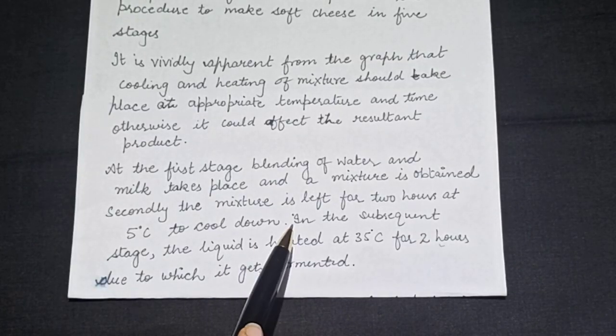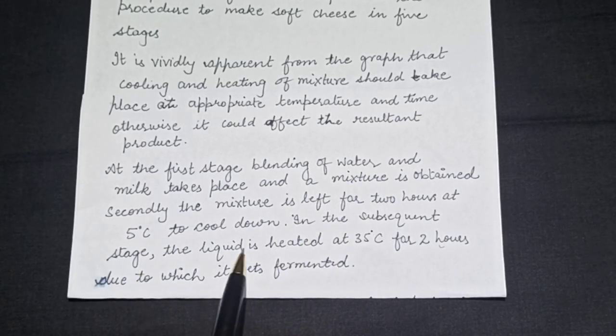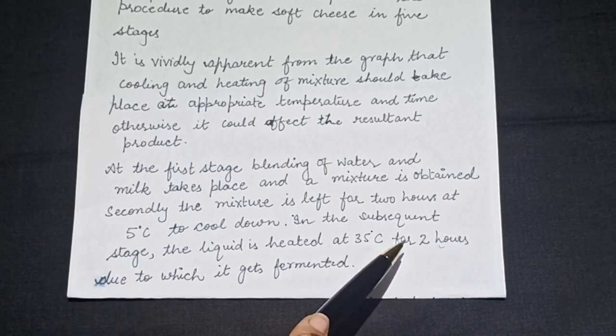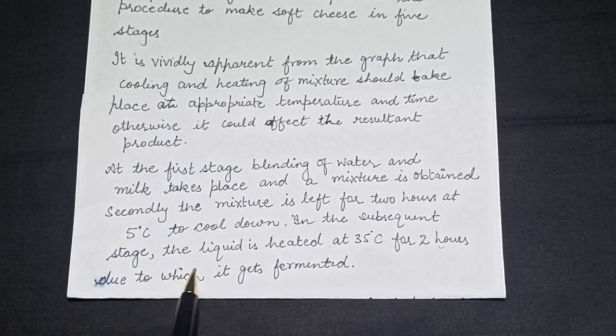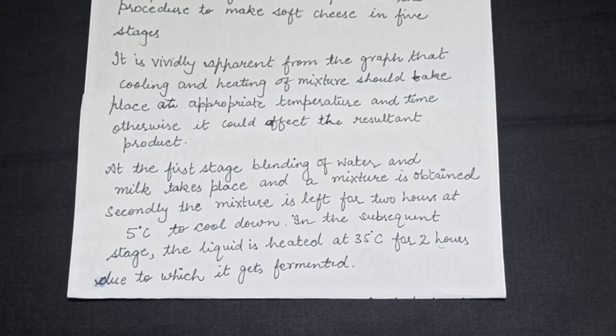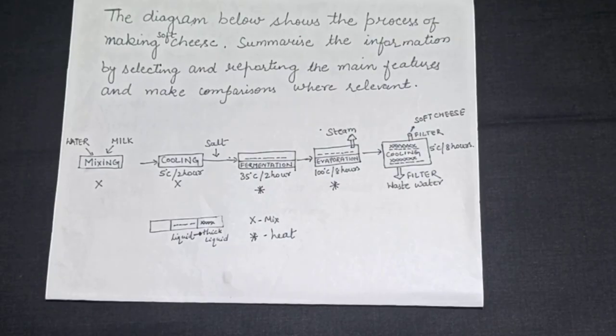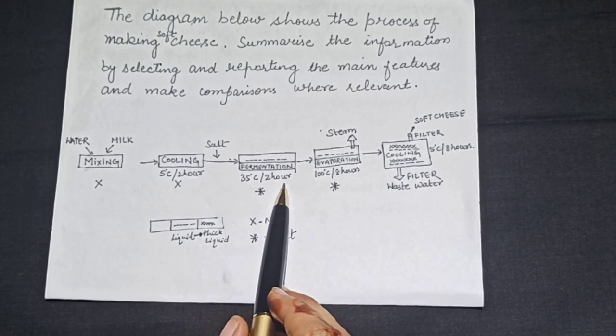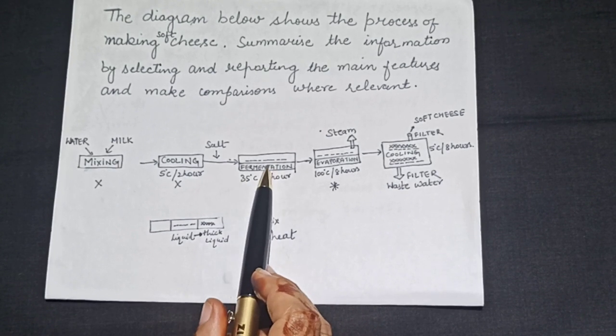Moving further in the subsequent stage the liquid is heated at 35 degrees Celsius for two hours due to which it gets fermented. As you can see the liquid is heated at 35 degrees Celsius for two hours and then this gets fermentation.